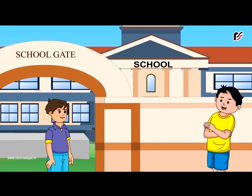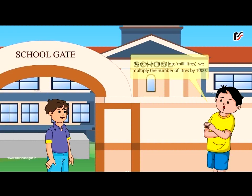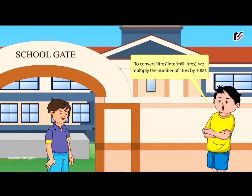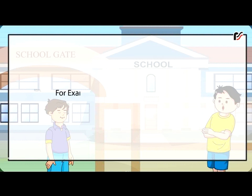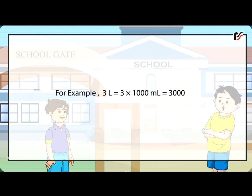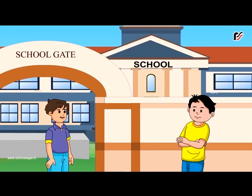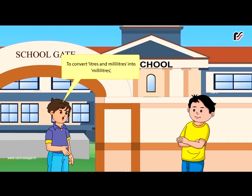Conversion: To convert litres into millilitres, we multiply the number of litres by 1000. For example, 3 litres is equal to 3 × 1000 millilitres, which is equal to 3000 millilitres.